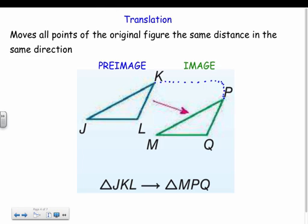Each point moves the exact same distance, so L would have moved the same distance horizontally and the same distance vertically as K did when it got to P. So these would be the same distance, these would be the same distance. That's our translation - it just shifts.